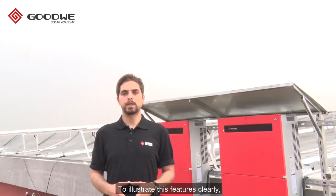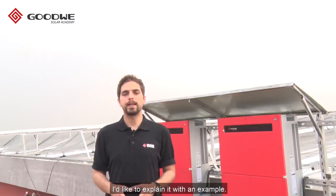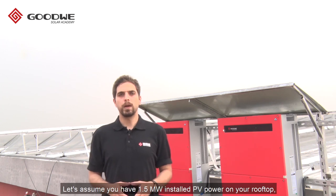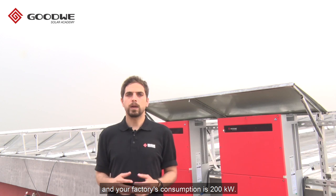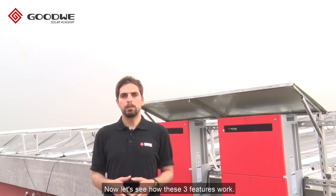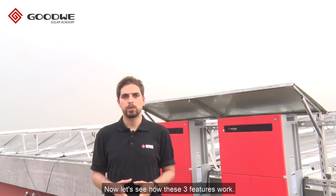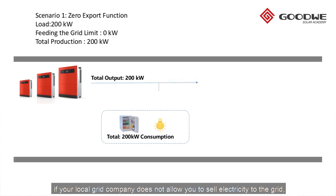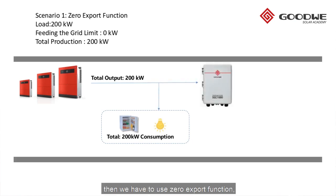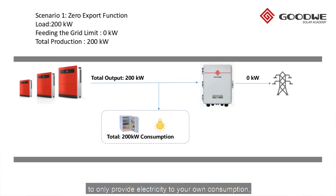To illustrate these features clearly, let me explain with an example. Let's assume you have 1.5 megawatt of installed PV power on your rooftop and your factory's consumption is 200 kilowatt. In the first scenario, if your local grid company does not allow you to sell electricity to the grid, then we have to use the zero export function. The inverters will reduce production to 200 kilowatt to only provide electricity to your own consumption but won't feed the grid.